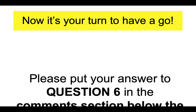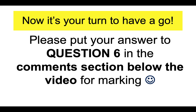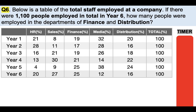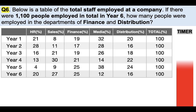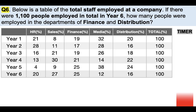So now it's your turn to have a go again. Please put your answer to question six in the comments section below the video for marking. The question is: below is a table of the total staff employed at a company. If there were 1,100 people employed in total in year six, how many people were employed in the departments of finance and distribution? Brilliant, well done.